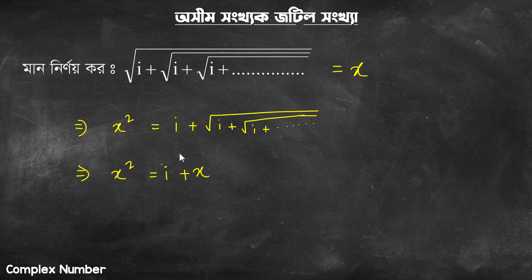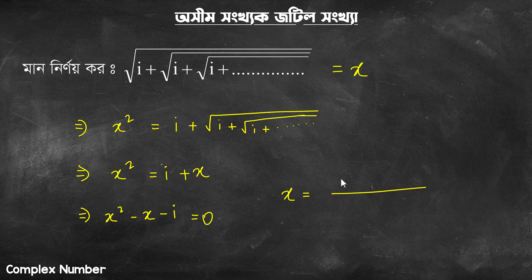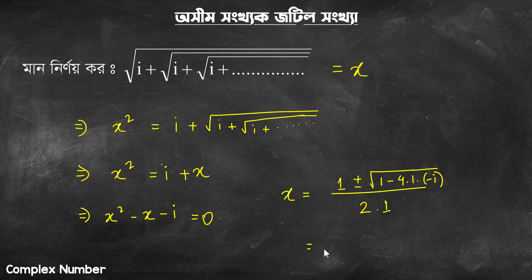So we take the value of x. x squared equals i plus x, which means x squared minus x minus i equals 0. Using the quadratic formula: minus b is plus 1, so b equals 1. Plus or minus root over b squared minus 4ac, where a equals 1. Divided by 2a. That gives x equals 1 plus or minus root over (1 plus 4i), divided by 2.